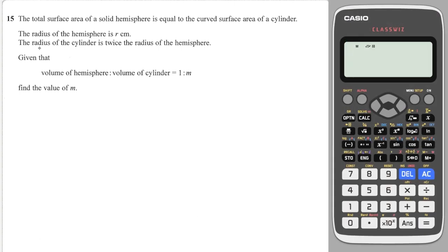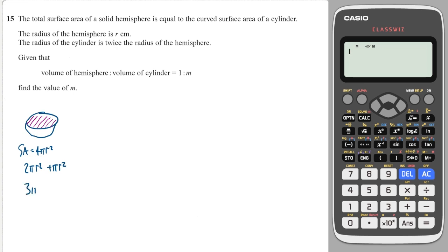Tricky question straight off the bat. We have a hemisphere which has a radius of r, and a cylinder which has a radius of 2r. It says that the total surface area of the hemisphere is equal to the surface area of the cylinder. A hemisphere looks like this. In your formula booklet you're told that the surface area of a sphere is 4πr². So a hemisphere we're going to half that to make 2πr², but in halving it you are now exposing the lid of the hemisphere which is a circle, so we're going to have to add on πr². So the total surface area of a hemisphere is 3πr².